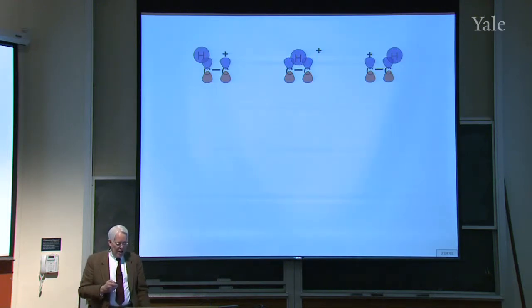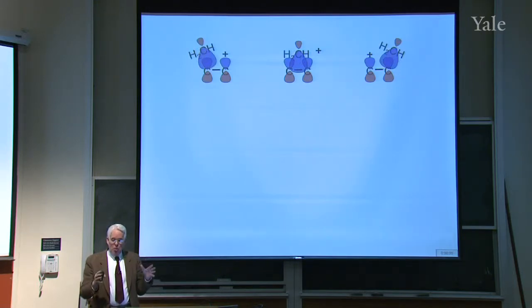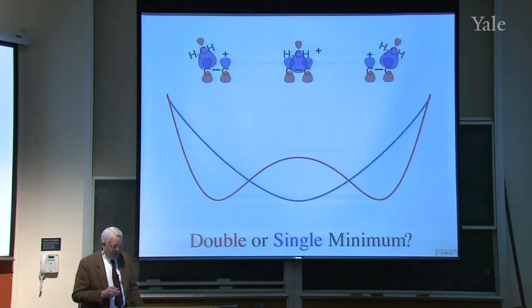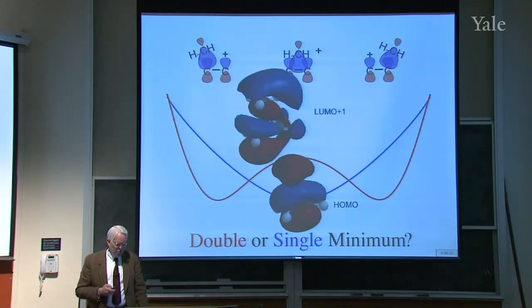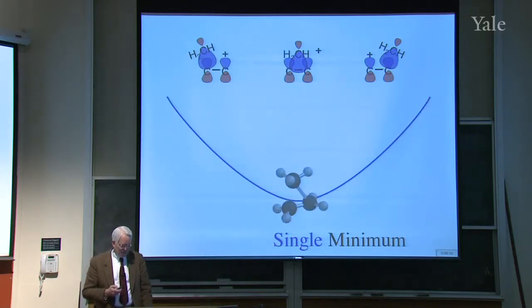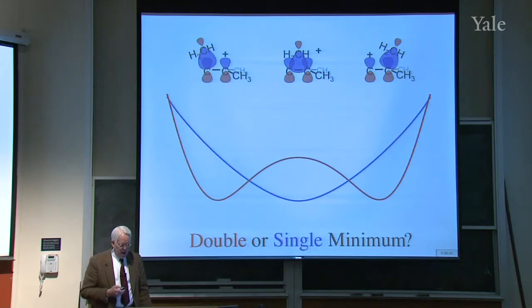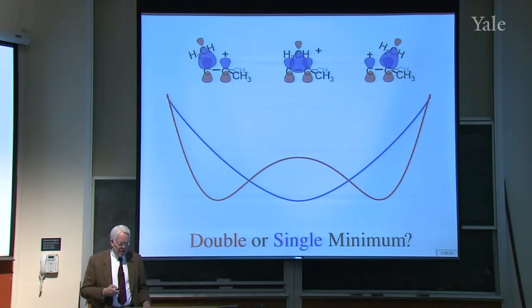The open structure is lower in energy than the bridge structure, so it's a double minimum. But it's different if you have a methyl group on top instead of hydrogen. The methyl has a somewhat bigger orbital than hydrogen, so it's better at overlapping two neighbors. So now it turns out to be a single minimum. That's the lowest energy structure.